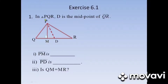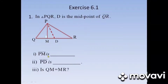Question number one: In triangle PQR, D is the midpoint of QR. D is the midpoint of Q and R, which means the distance from Q to D and the distance from D to R are equal. Sub number one — PM is what? PM is a line segment which is drawn from the vertex perpendicular to the opposite side making 90 degrees. So PM is an altitude.